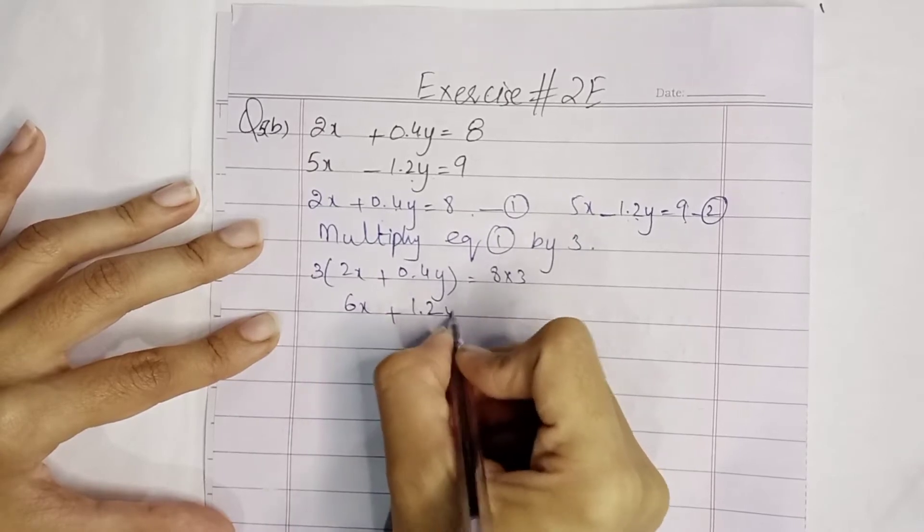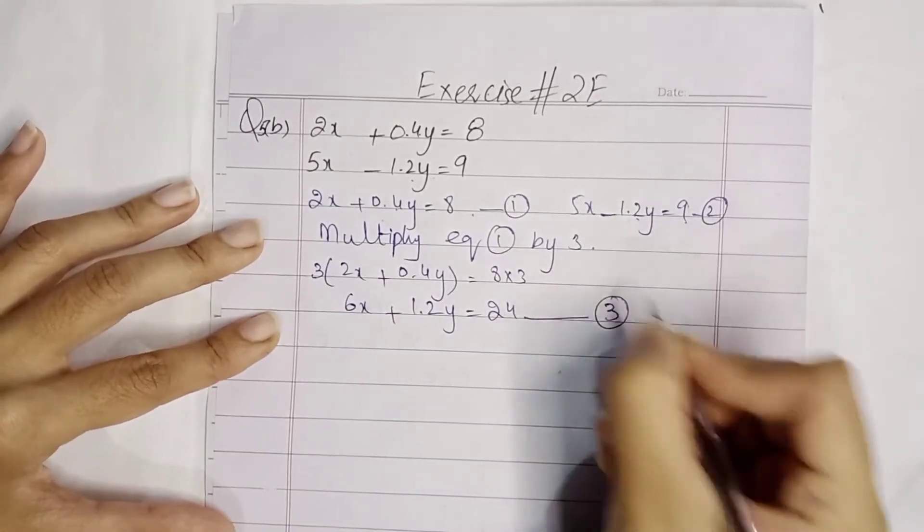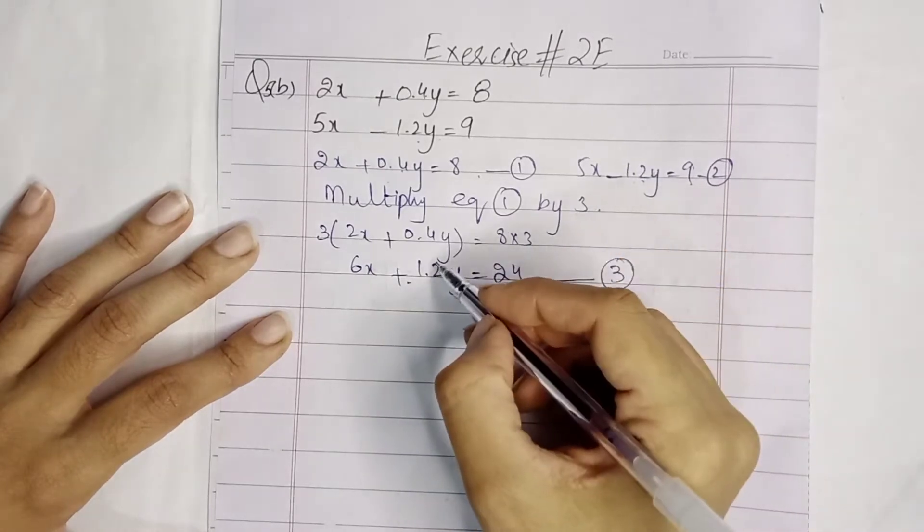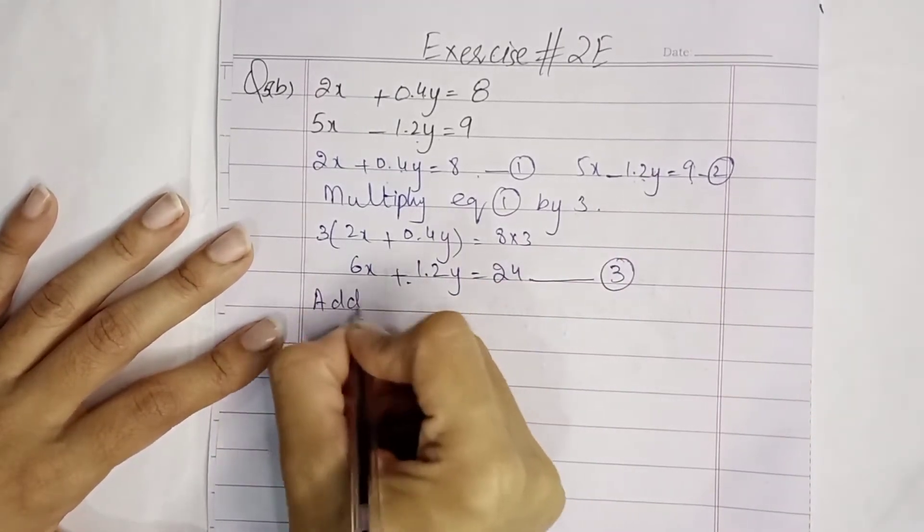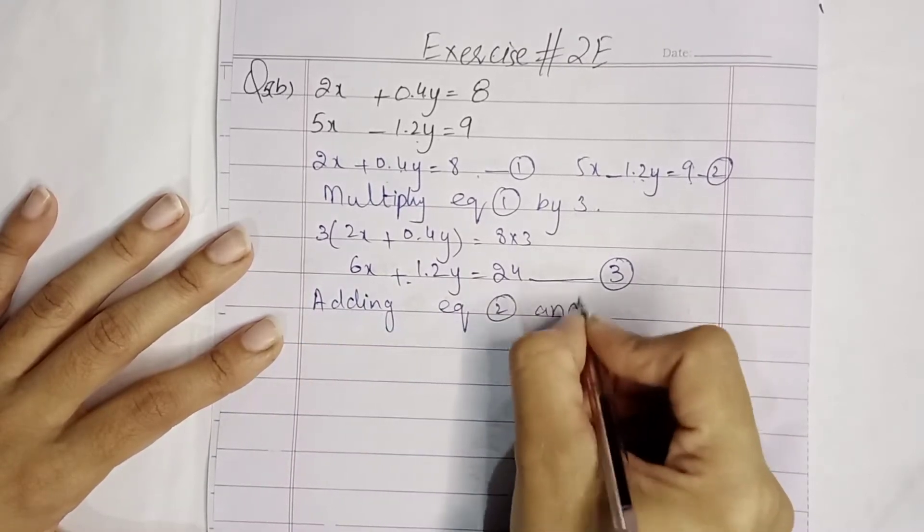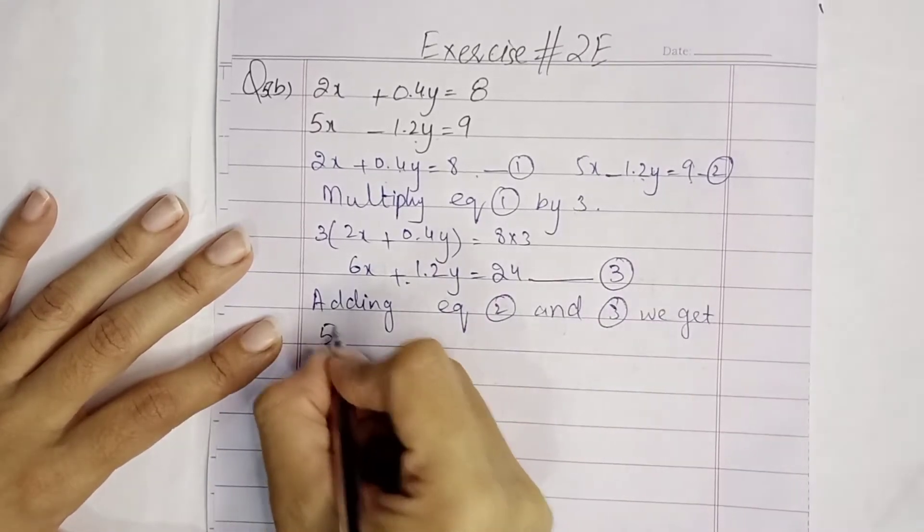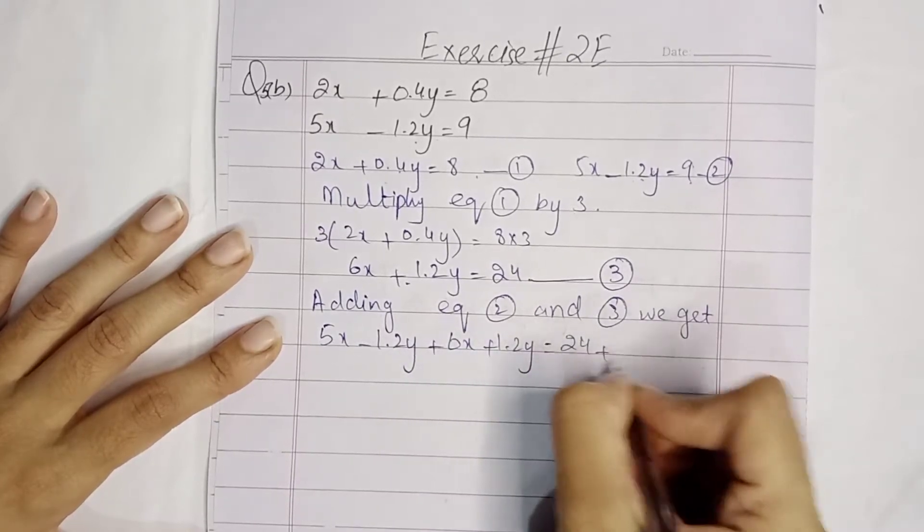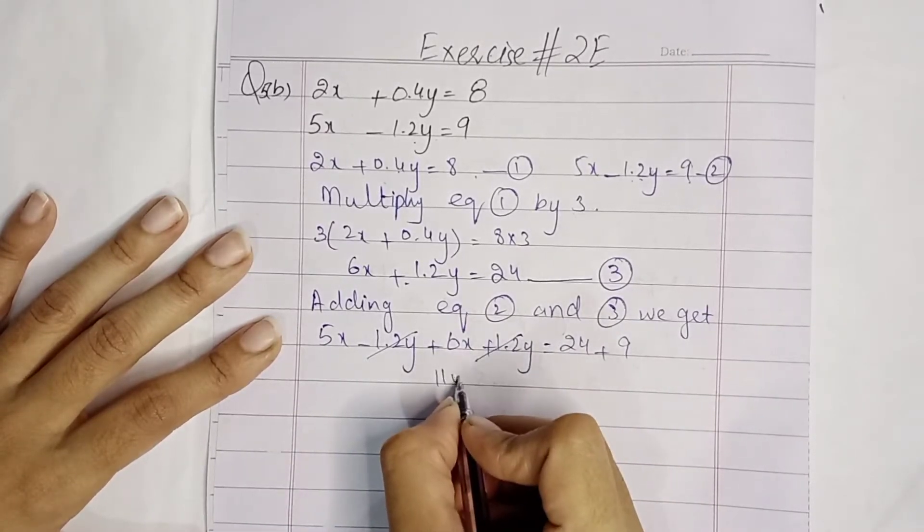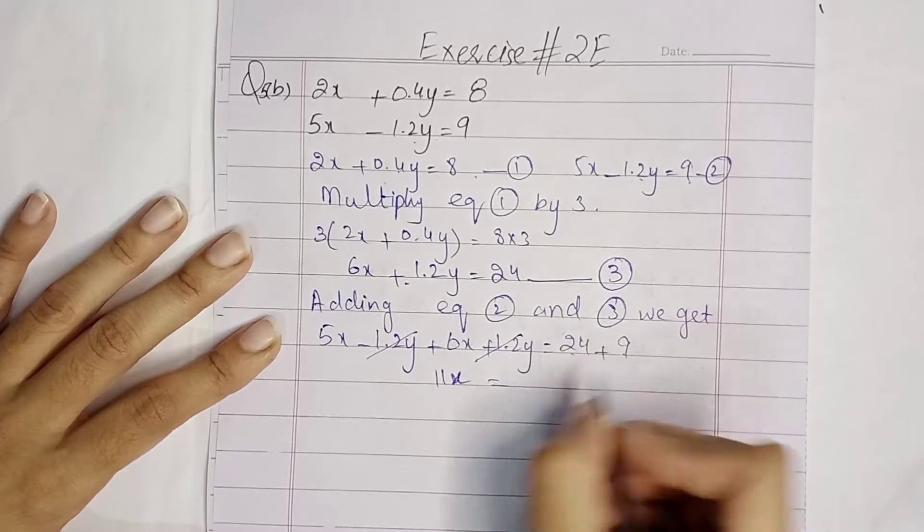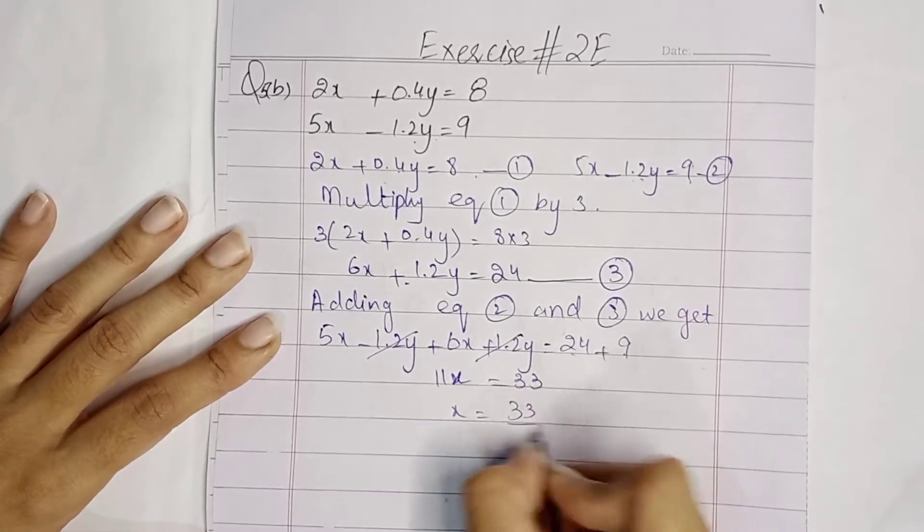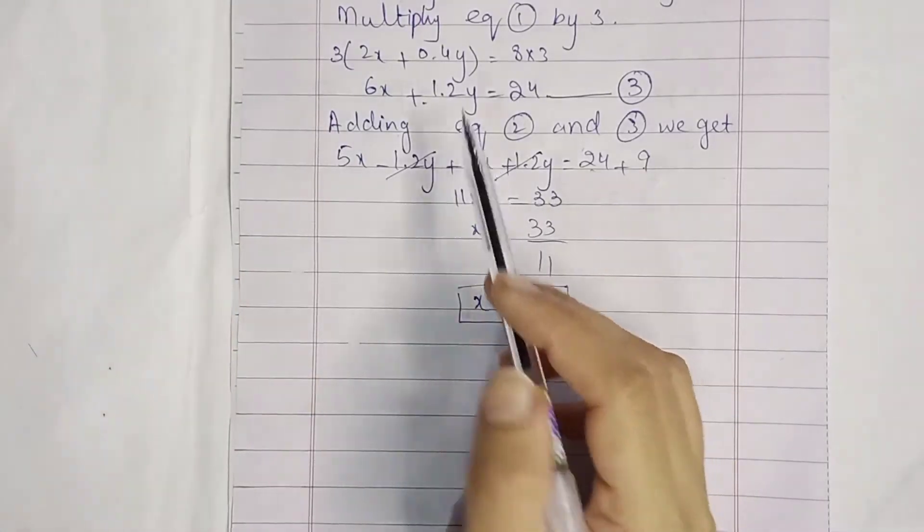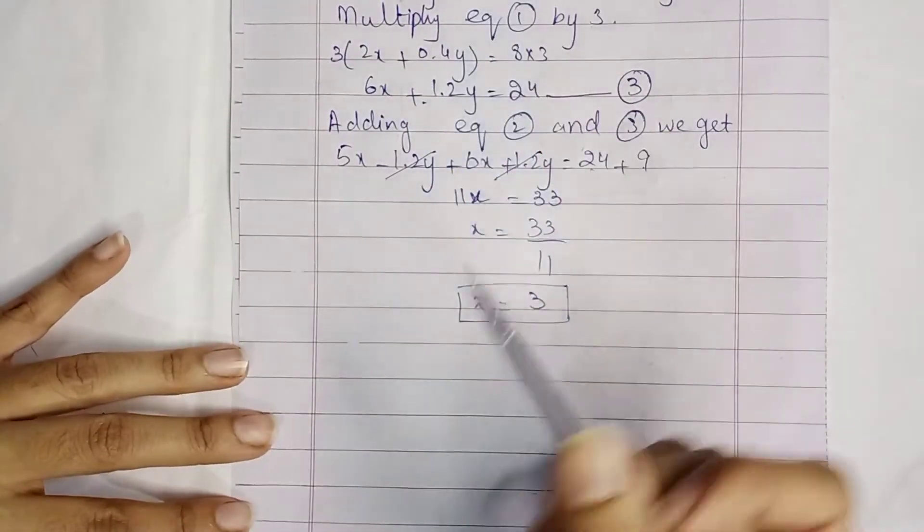We get 6x plus 1.2y equals 24. This is our equation number 3. If we add equation 3 and equation 2, we get 5x minus 1.2y plus 6x plus 1.2y equals 9 plus 24. This cancels, giving 11x equals 33.